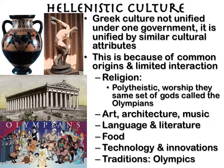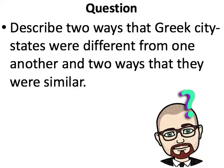Their food was similar, their technology and innovations — so much that they had in common, even though each of them saw themselves as very different from one another. With that said, I'd like for you to describe two ways the Greek city-states were very different from one another and two ways they were very similar, in the comment section below. Have a wonderful Wednesday, thanks for watching!